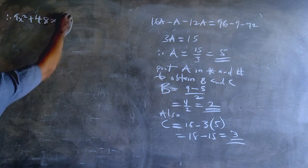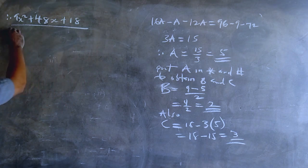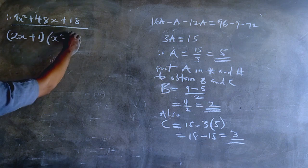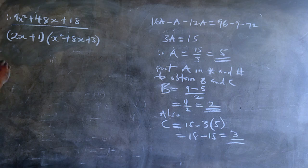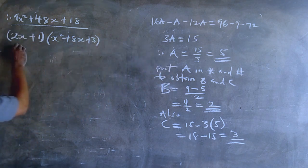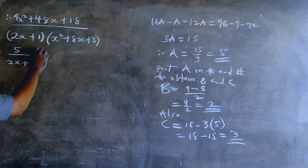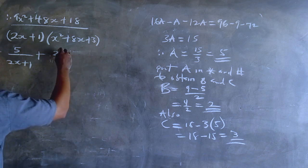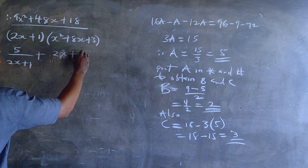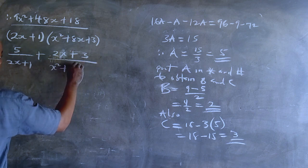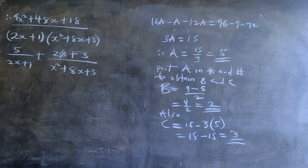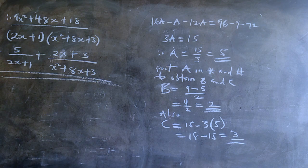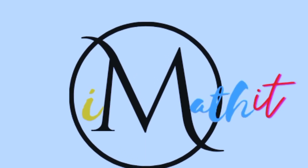Let's go back and write down the original expression we are simplifying. We have 9x squared plus 48x plus 18, all over 2x plus 1 multiplied by x squared plus 8x plus 3. With a equals 5, b equals 2, and c equals 3, the partial fraction decomposition is: 5 over 2x plus 1, plus 2x plus 3 all over x squared plus 8x plus 3. And there you have it — that's the solution. If you have any problem with this, go back and look at the previous lessons. Until next time, keep mathing it, keep winning.